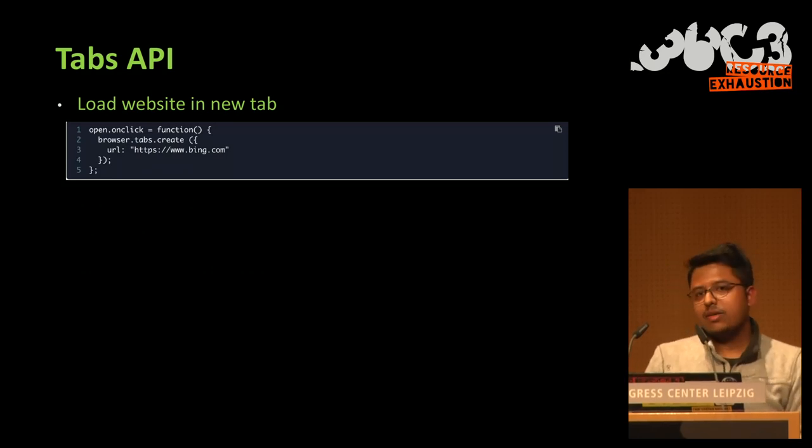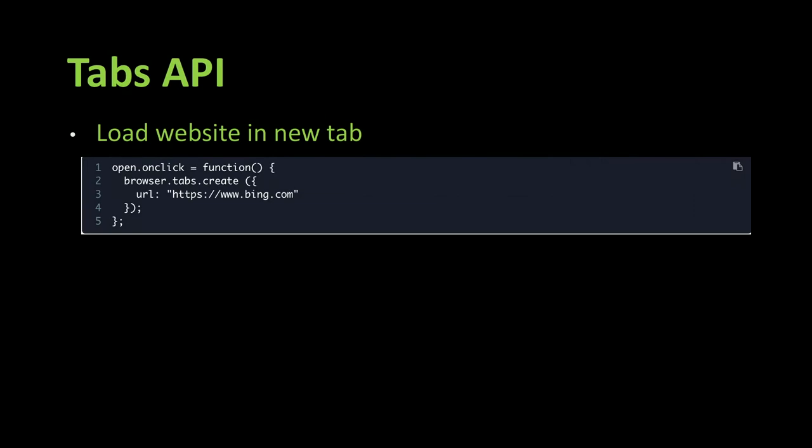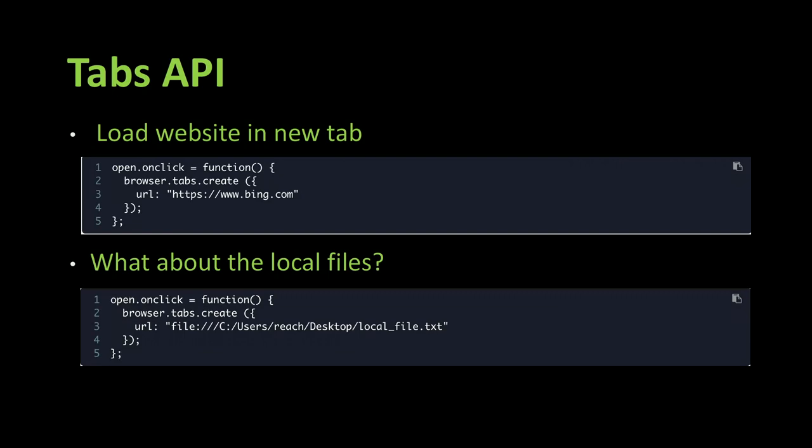Let's see — if you want to load bing.com on a new tab using a browser extension, you can write five lines of code that call browser.tabs.create and pass a URL like https://www.google.com. That's as per the documentation and for the good boys, not for us. As an evil mind, I was curious: what would happen if I tried to load local files instead of a normal domain? So I replaced the Bing URL with a local file URI to see how the browser would treat it.